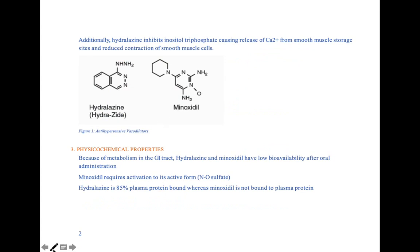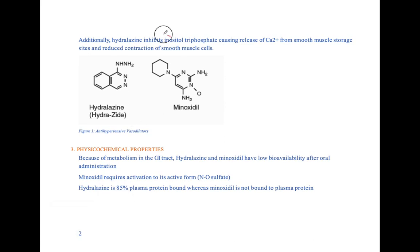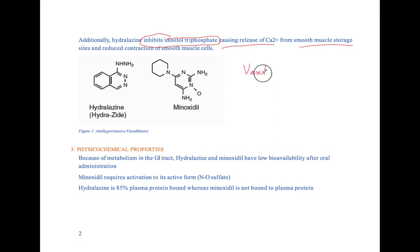It is the reduced intracellular calcium level that ultimately is going to lead to vasodilation. Now, in addition to this effect, you also have additional effects by hydralazine. Hydralazine is going to inhibit inositol triphosphate, causing release of calcium from smooth muscle storage, and that's going to lead to reduction in contraction of smooth muscle cells, which is going to be the contributing factor for vasodilation.